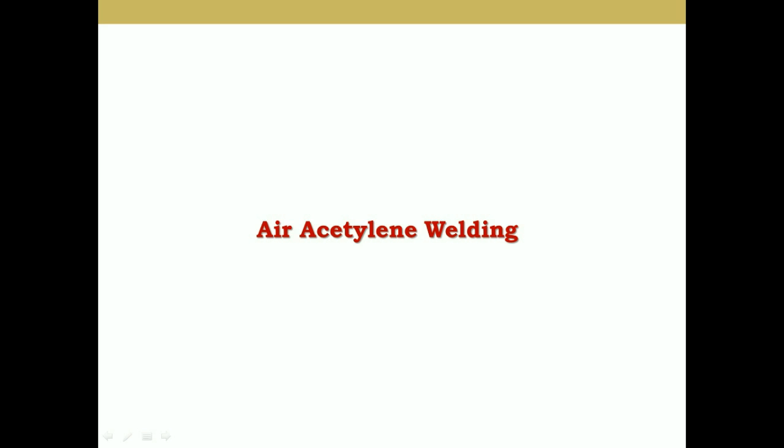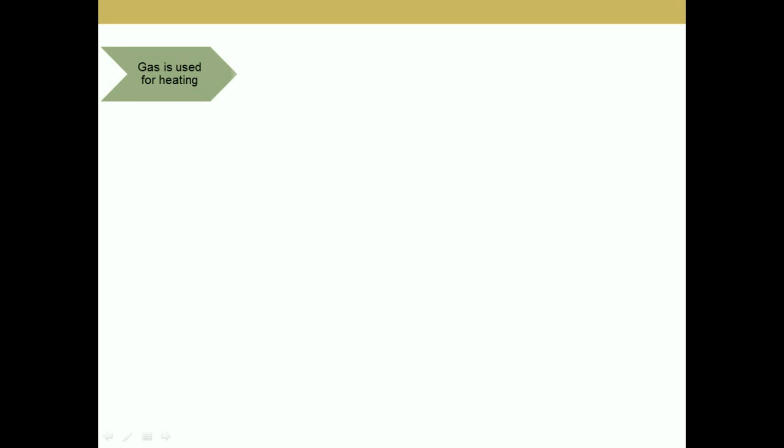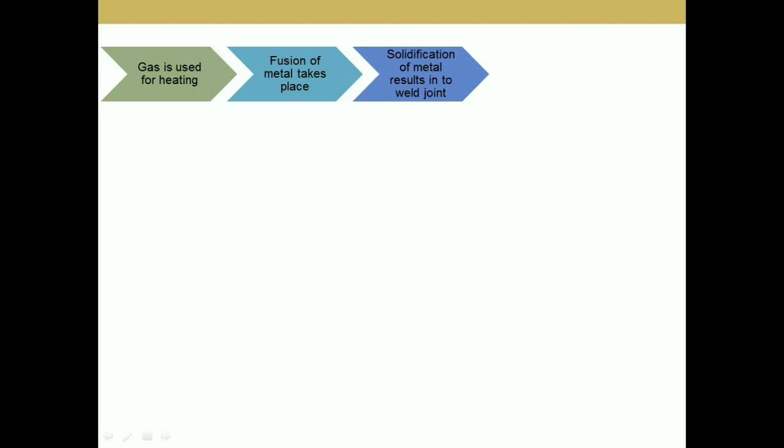Welcome. In this video we are going to discuss the air acetylene welding process. Air acetylene is basically a fusion welding process where heating takes place with the help of a gas. The heat is used to reach the molten metal of the base metals, which will then fuse together to form the joint after solidification. Let's consider the details about air acetylene welding process.